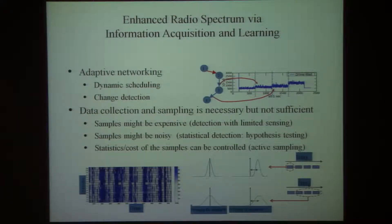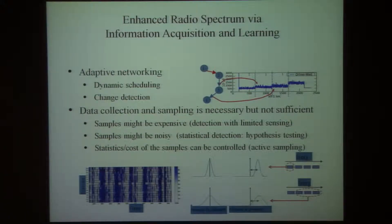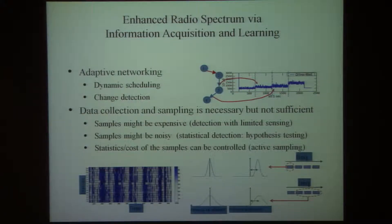As you know, Professor Javidi has worked in networking, and the topic she's looking at is how to learn about the state of the network and then to dynamically adapt to network conditions. A component of this is change detection, and once you detect the change, to act accordingly — to do dynamic scheduling. All of this requires sensing, so data collection and sampling is necessary, but then you need to follow it up with some action.